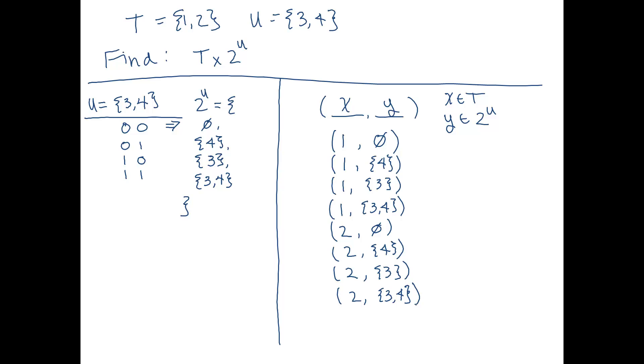Okay. And now I can go ahead and group these together into a set. Okay. And then this is going to be the set that we were looking for. This is the Cartesian product of T and the power set of U.